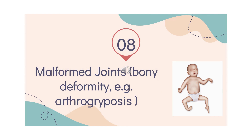Some children are born with a mild form of joint or bony deformity, or with defective cartilage, which can lead to osteoarthritis later in life. For example, juvenile arthritis is a medical condition in children.